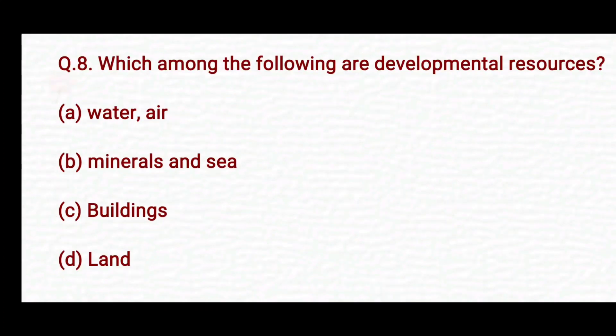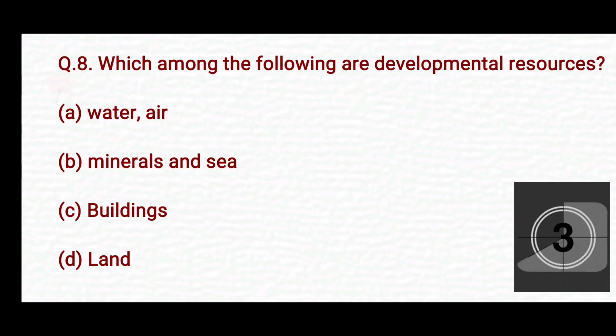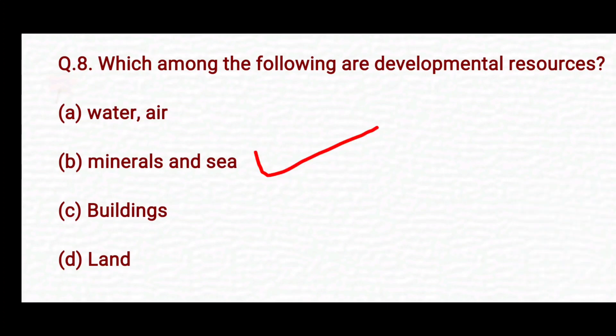Which among the following are developmental resources? Option A: water and air. Option B: minerals. Option C: buildings. Option D: land. The right answer is Option B — minerals.